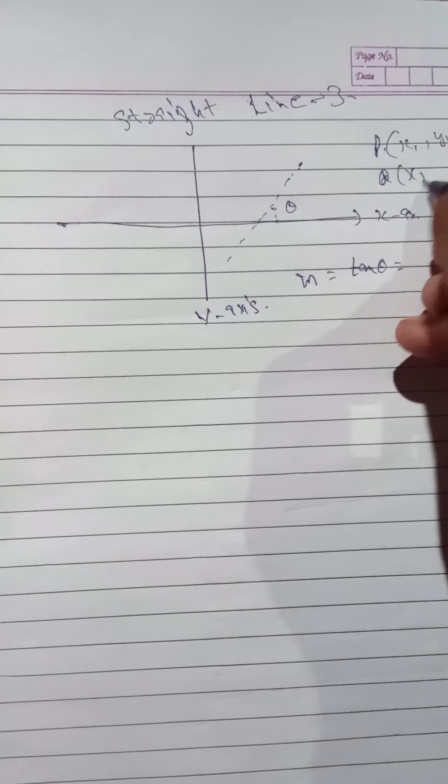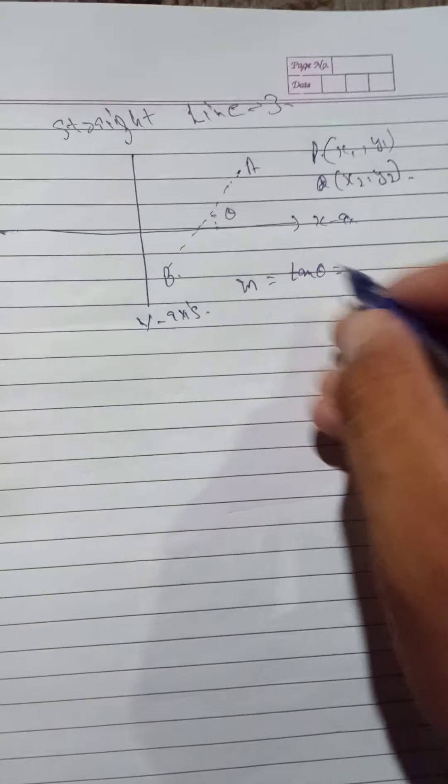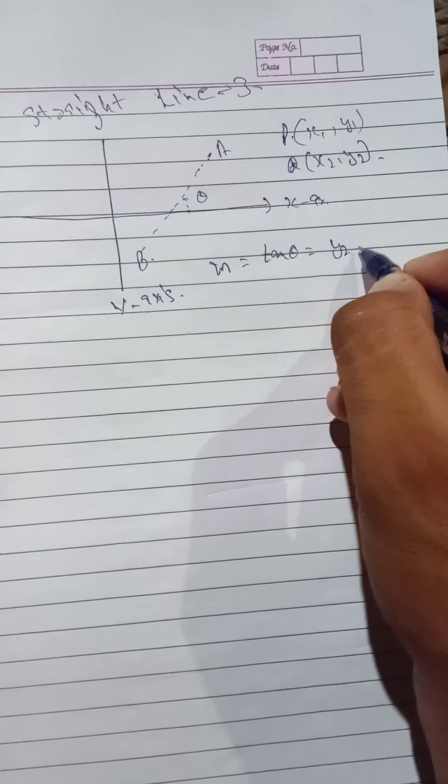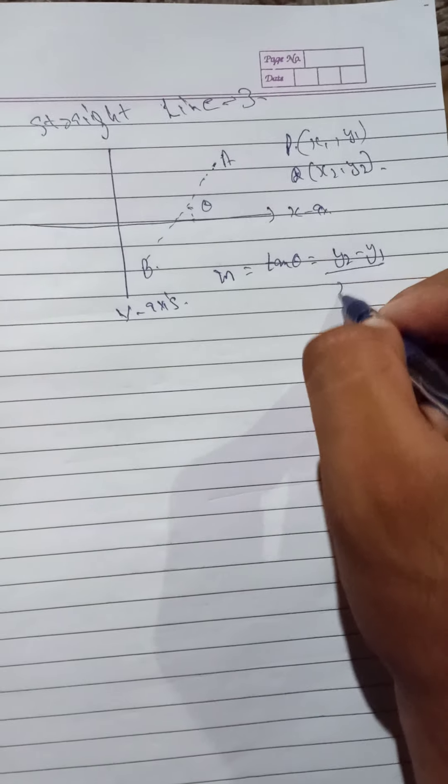Here we are discussing some properties of slope. If P and Q, that is x1,y1 and Q x2,y2, are two points lying on this line, then the slope will be given by y2 minus y1 divided by x2 minus x1. This is also the formula of slope.